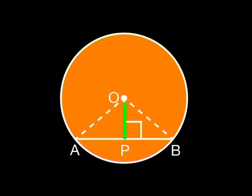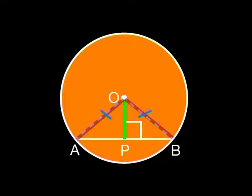OP is common to both triangles. OA and OB are both radii of the circle, so they are equal, and both angles at P are 90 degrees. These three reasons make the triangles congruent, and so AP equals PB.